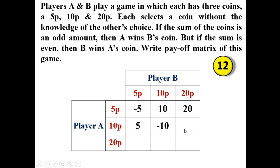For player A with 10 paise and player B with 20 paise, the sum is 30 paise — even — so B wins A's coin; the value is minus 10. For player A with 20 paise and player B with 5 paise, the sum is 25 paise — odd — so A wins B's coin; the value is plus 5. The remaining cells give minus 20 and minus 20.